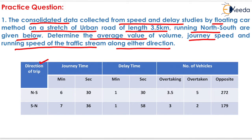In the given table, the direction of trip, journey time, delay time, and number of vehicles are provided. For north-south, the journey time is 6 minutes 30 seconds, delay time is 1 minute 30 seconds, number of vehicles overtaking is 3.5, overtaken is 5, and the opposite direction count is 272. Similarly, data for south-north is also given.